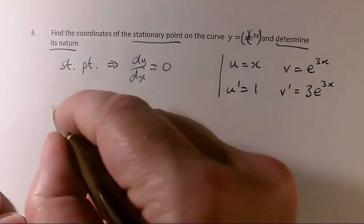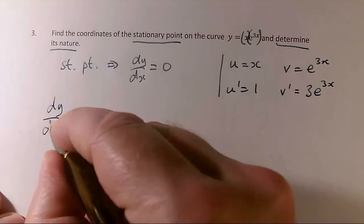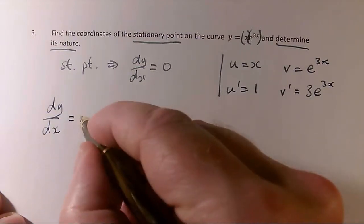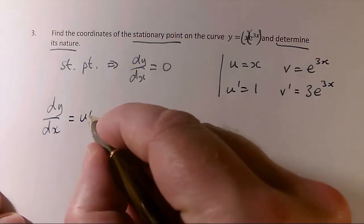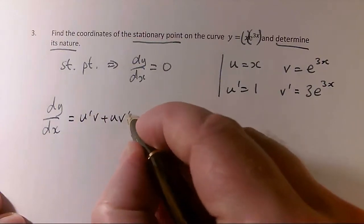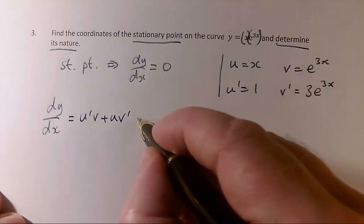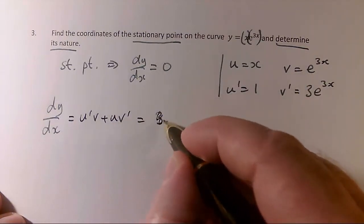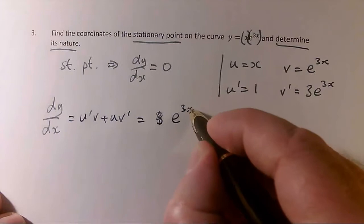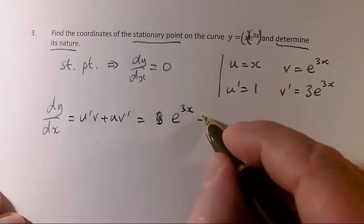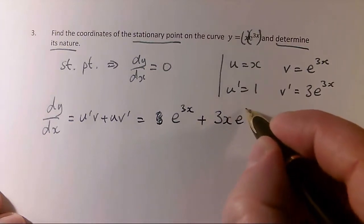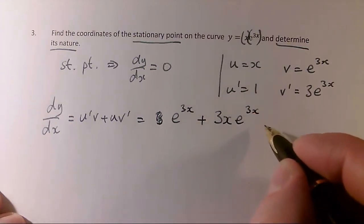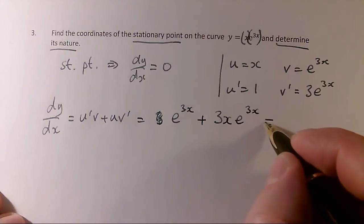So dy/dx, which is what I wanted, dy/dx equals—well, the product rule says it is u dashed v plus u v dashed. So u dashed v is e to the 3x times 1 plus u, which was x times 3e to the 3x is 3xe to the 3x. But I want a stationary point, so this has to equal 0.